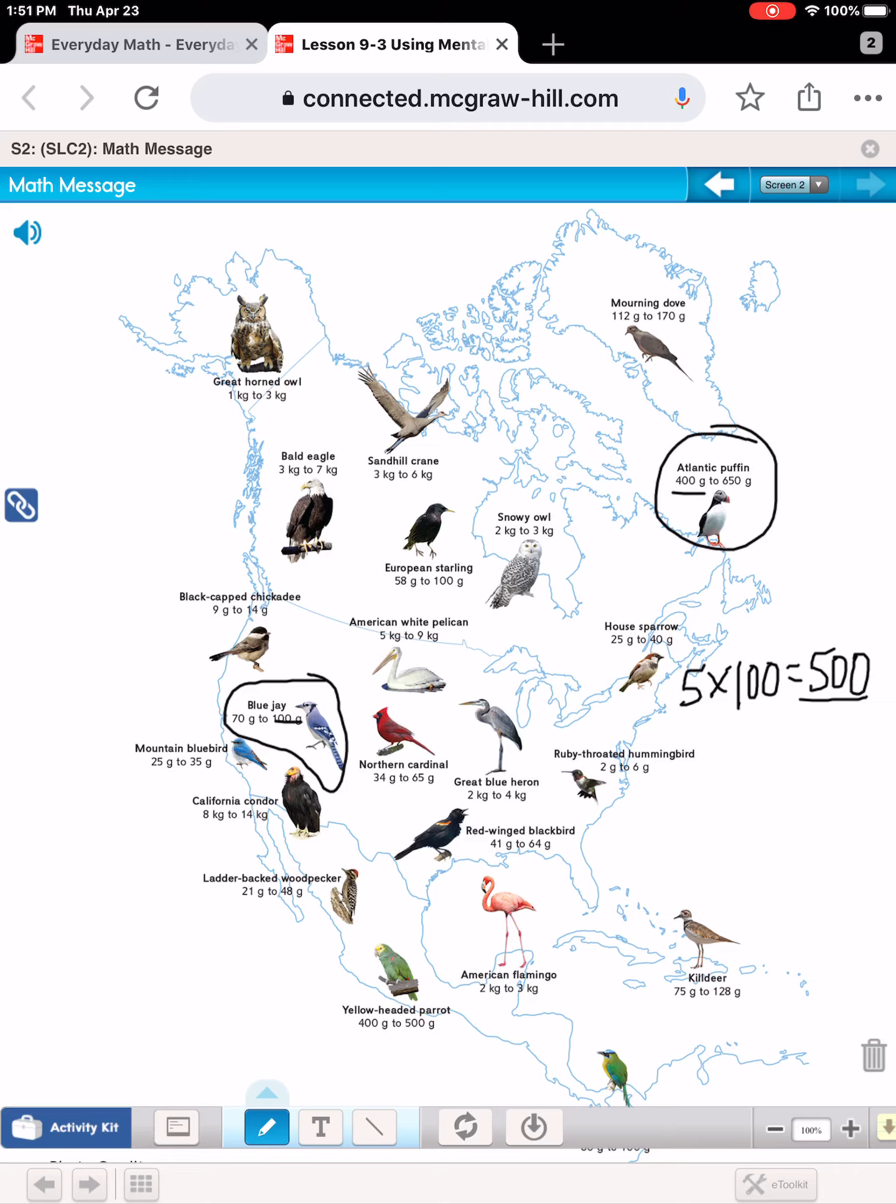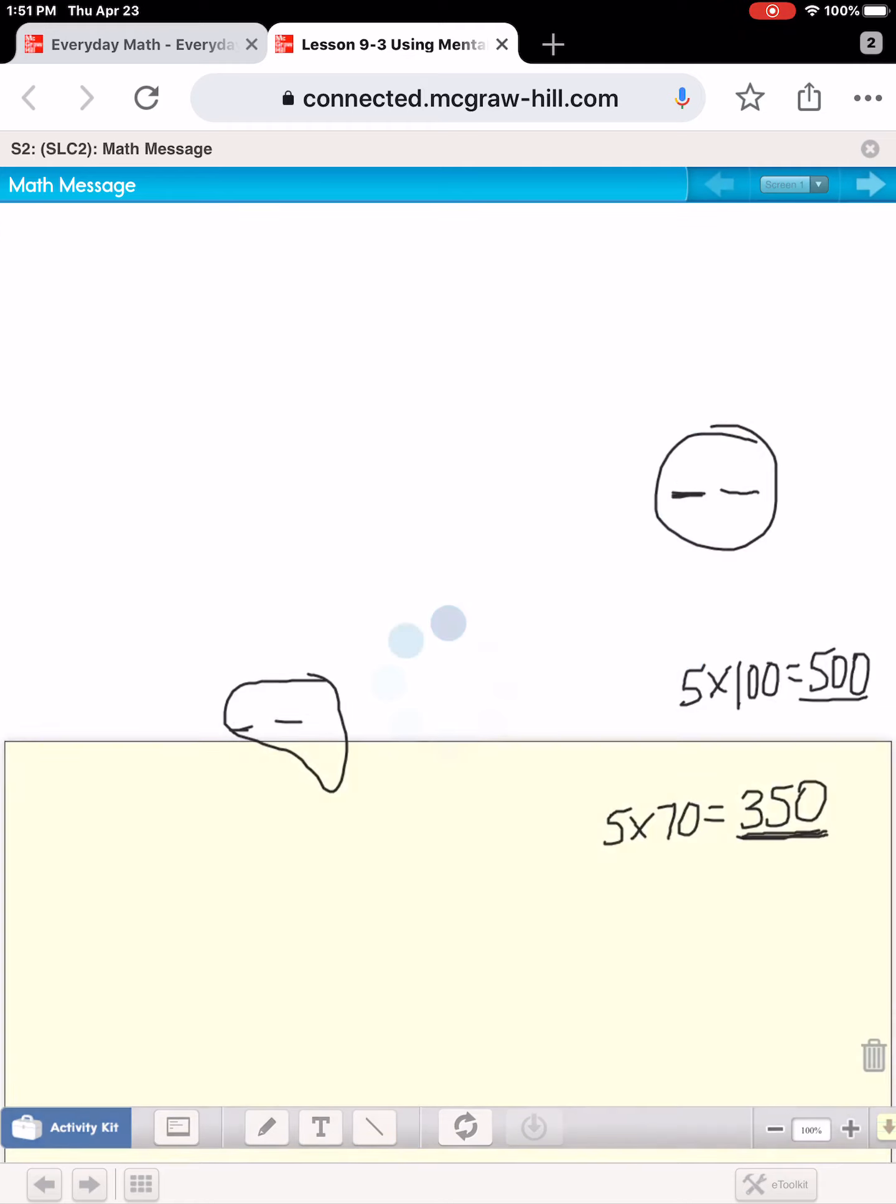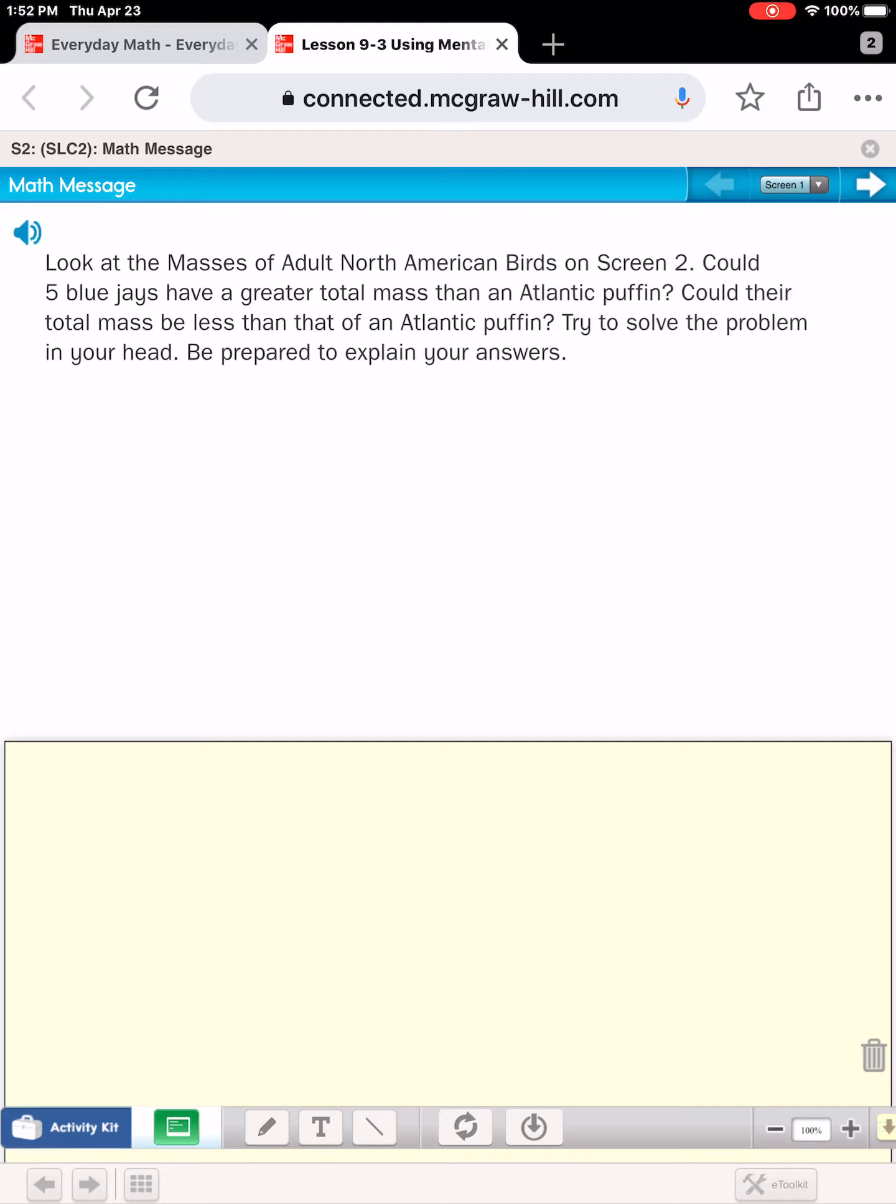The second question asked, could five Blue Jays have a total mass that's less than one Atlantic Puffin? So in this case, we'd want to look at the smaller Blue Jays. So if we had five Blue Jays that each had a mass of 70 grams, they would have a total mass of 350 grams. So if we took five smaller Blue Jays and they had a mass of 350 grams, is that smaller than one Atlantic Puffin? It is because 350 is smaller than 400. And certainly 350 is smaller than 650. But the answer to both of these questions, could five Blue Jays have a greater mass than one? Yes. Could their total mass be less than one Puffin? The answer to that is also yes.